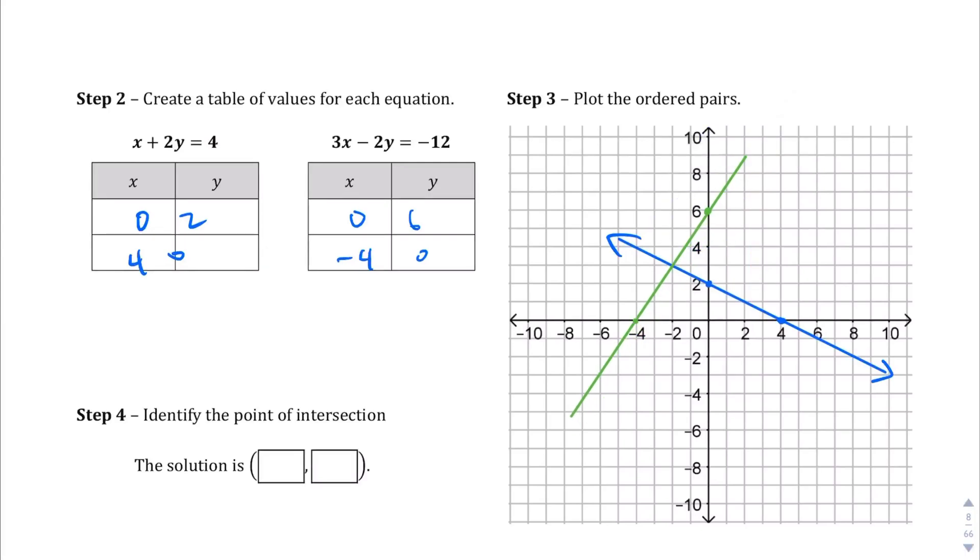And if we did this correctly, we should find the intersect point right here. Right? Let's change the color. The intersect point is going to be right here at (-2, 3). So, we say that the point of intersection is (-2, 3).